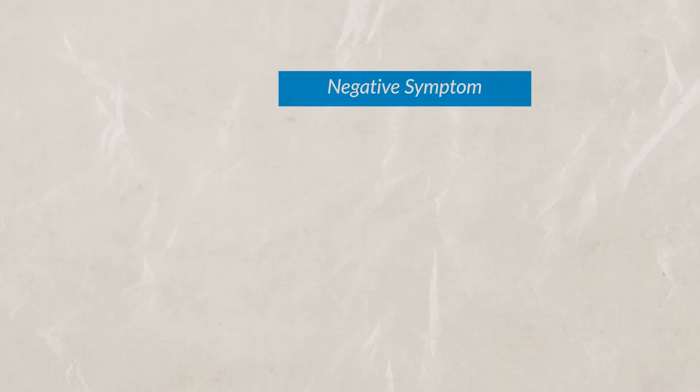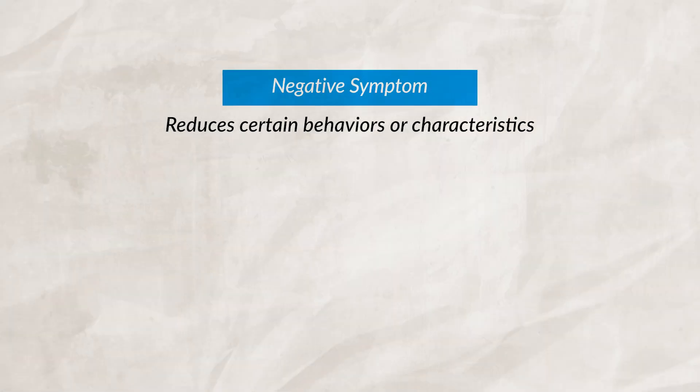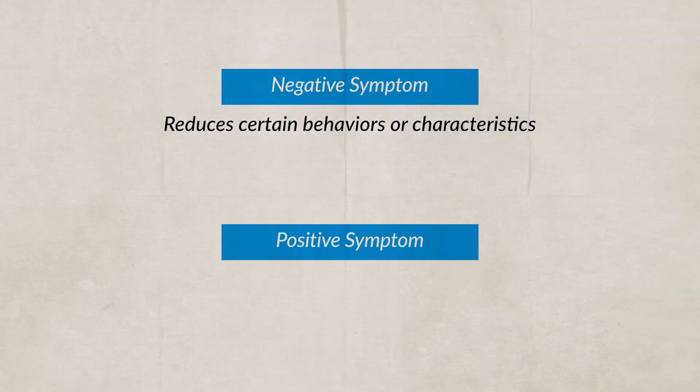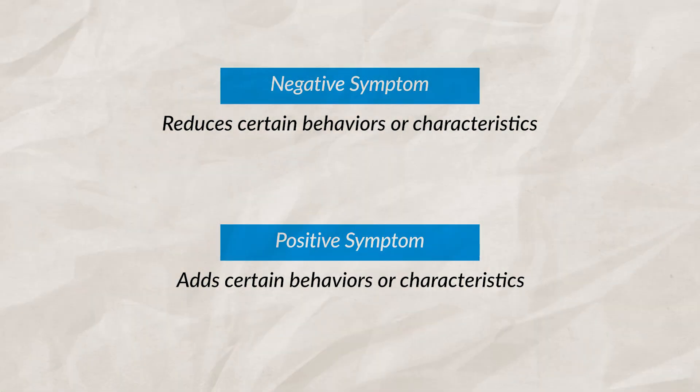One important thing to highlight about Schizophrenia — and disorders in general — is the concept of negative and positive symptoms. You want to think in terms of math, not necessarily good or bad. For example, a negative symptom of Schizophrenia is reduced emotional expressions, because it takes away something from the individual. A positive symptom would be hallucinations, because the disorder is adding something to the individual's reality. Positive symptoms add something; negative symptoms remove something — it has nothing to do with good or bad.